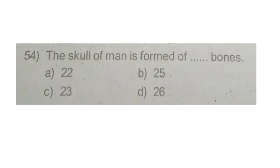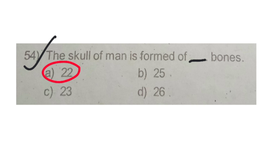The skull of a man is formed of how many bones? Options are 22, 25, 23, 26. The answer is option A: 22. The human skull is made up of 22 bones.